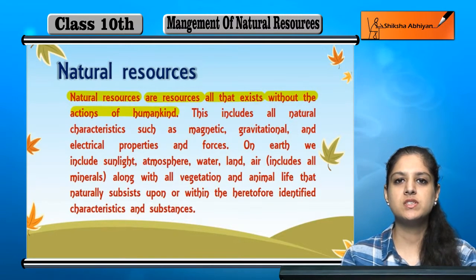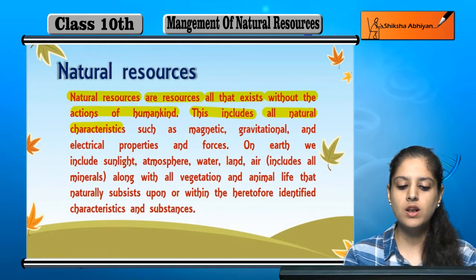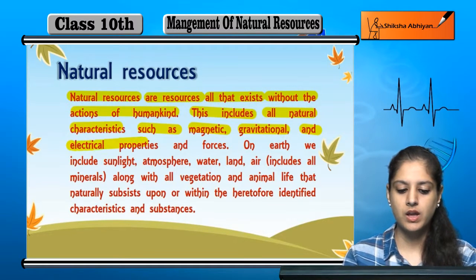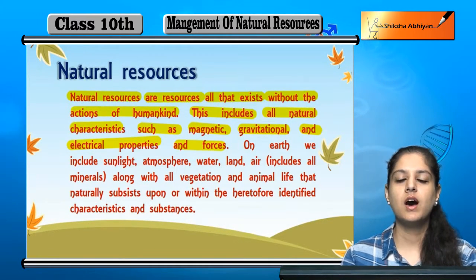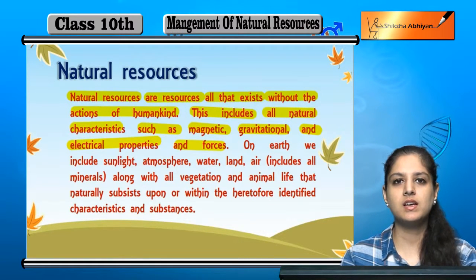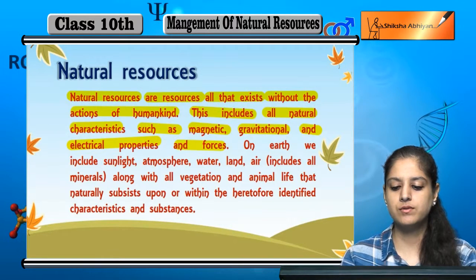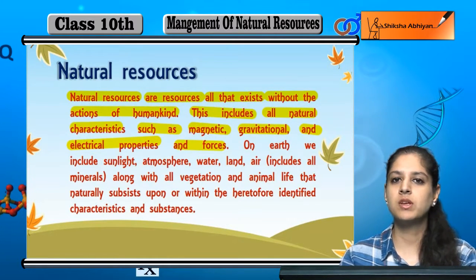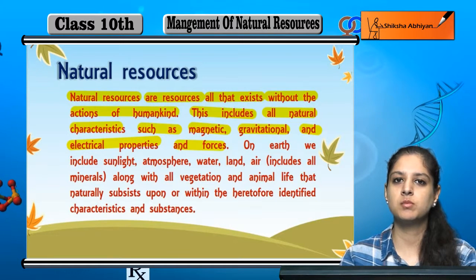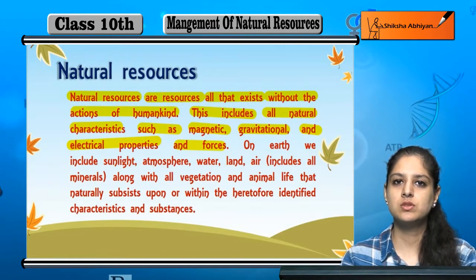Ye sab cheez hai kya include karti hai? This includes all natural characteristics such as magnetic, gravitational and electrical properties and forces. Har wo cheez jho ki magnetic hai, gravitational hai, electrical properties ke saath hai — wo har cheez natural hai. Usme human beings ne kuch nai kiya. In sabhi cheezo ko haam natural resources keheti hai.